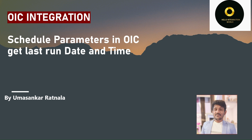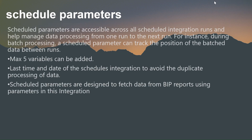Let's understand what scheduling parameters are. Basically, scheduling parameters are accessible across all scheduled integrations and help manage data processing from one instance run to another. For example, when you are extracting supplier data from the Fusion application and you have a requirement to extract suppliers on an incremental basis — meaning you want to extract based on the last run date — that is the scenario where we implement scheduling parameters. It is helpful when you are doing batch processing, as a scheduling parameter can track the position of the batch data between runs.